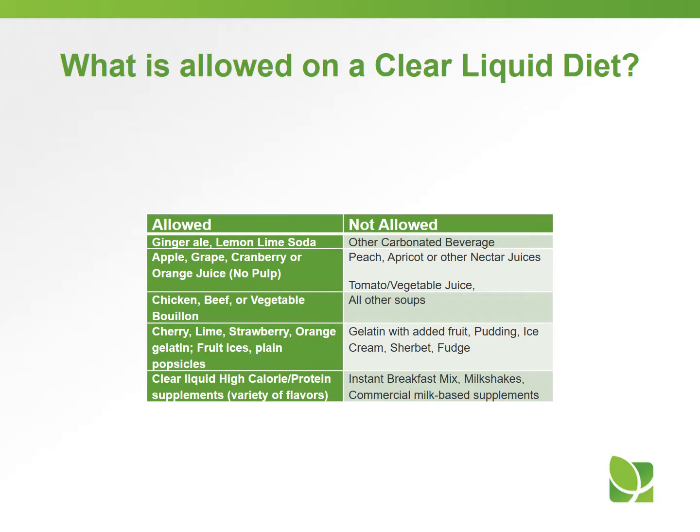What is allowed on a clear liquid diet? You may have ginger ale, lemon, lime, or soda; apple, grape, cranberry, or orange juice as long as it has no pulp; chicken, beef, or vegetable bouillon; cherry, lime, strawberry, or orange gelatin; fruit ices; plain popsicles; and clear liquid high-calorie protein supplements.